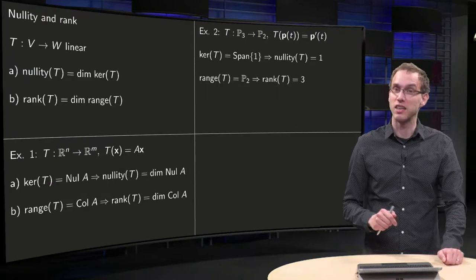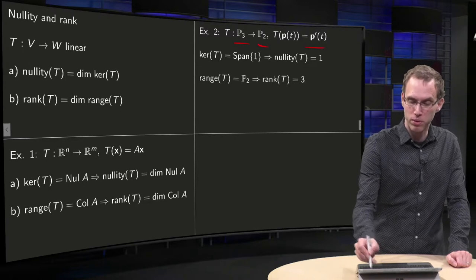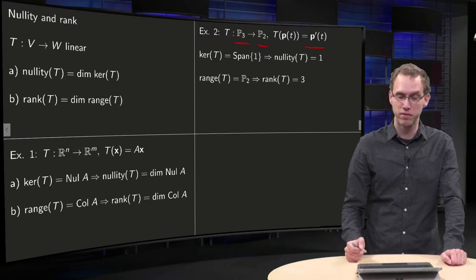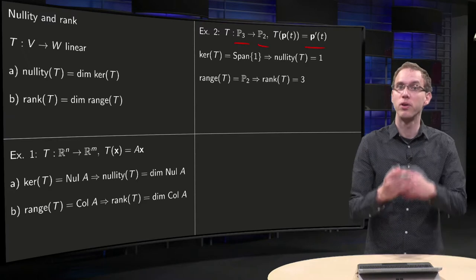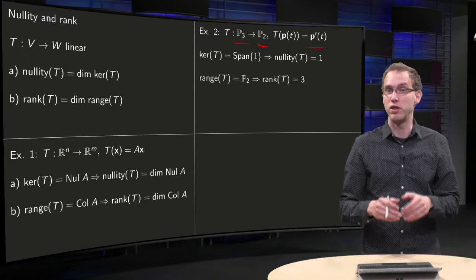Second example: if we have a transformation from P3 to P2 where we compute the derivative, what's the kernel? The kernel of T is the set of all polynomials which are mapped to zero, so those are all the constant polynomials,